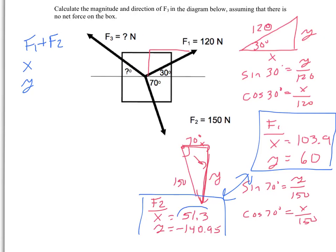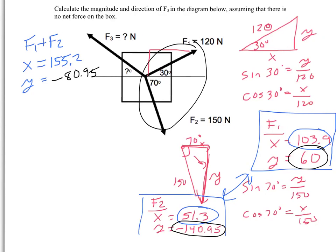So F1 and F2, the x is this 51.3 plus the 103.9. So I'm going to add 103.9 plus 51.3. So together, they have an x component of 155.2. And then their y components are this negative 140.95 and the 60. So I'm going to add those together, negative 140.95 plus 60. So together, their y components are negative 80.95. And looking at these two together, it looks like they are pulling down more than up. So it makes sense that it's a negative y. And clearly, it's a positive x because they're both pulling to the right.